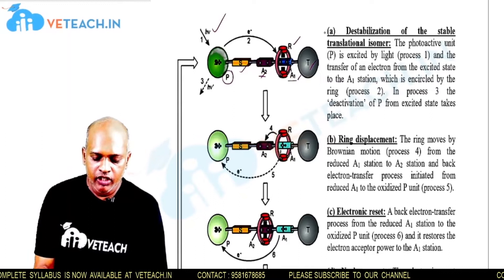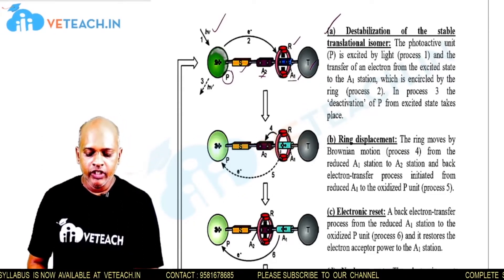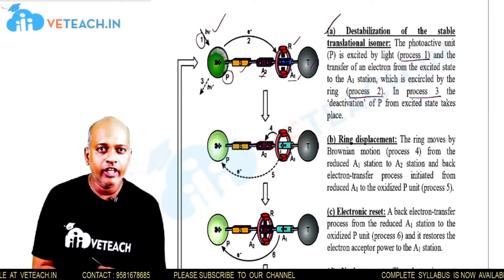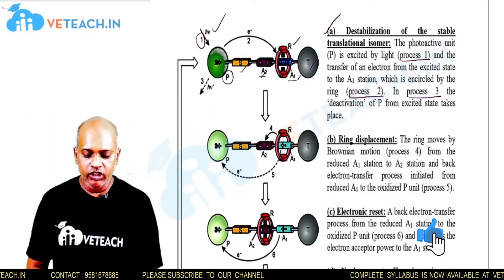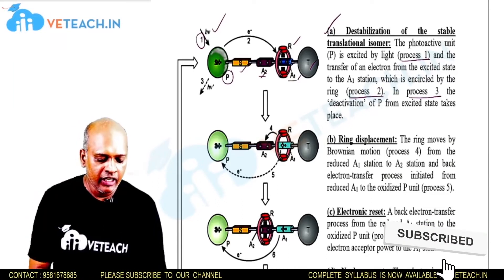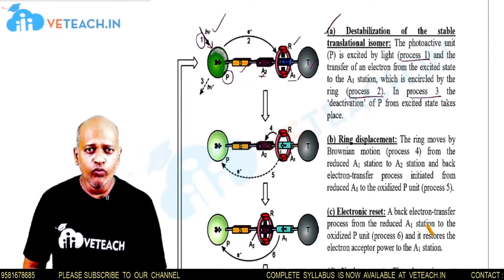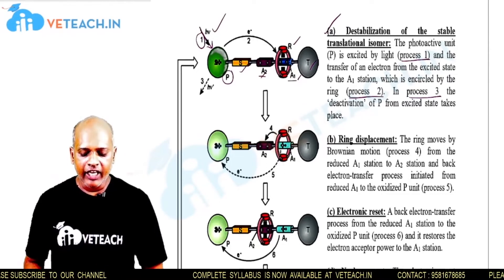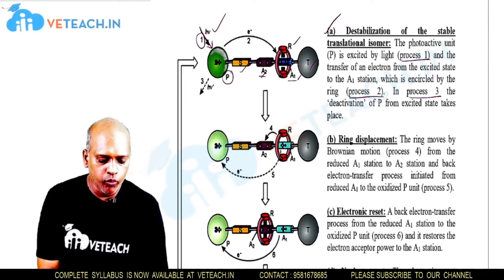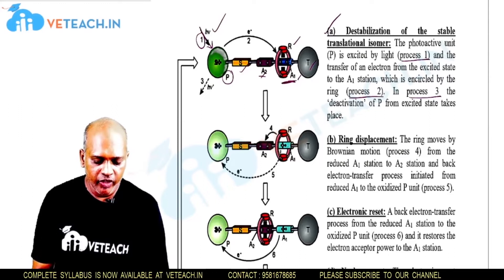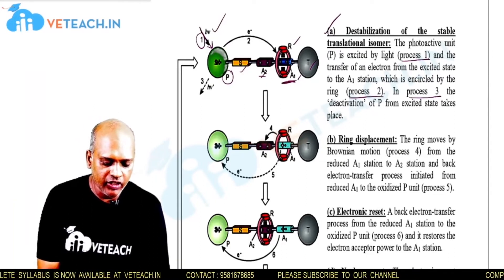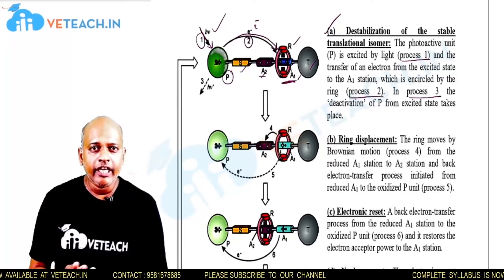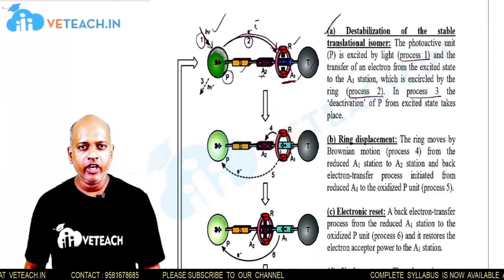The first operation — destabilization of the stable translational isomer — involves three processes. In process 1, the photoactive unit P is excited by light. In process 2, after activation, an electron is transferred from the photoactive group to the electron-acceptor station A1, where the ring is also present.